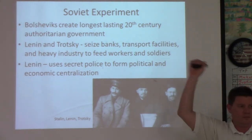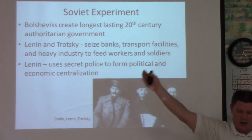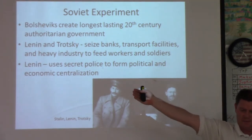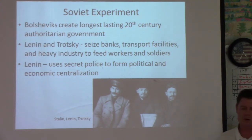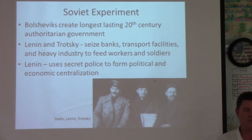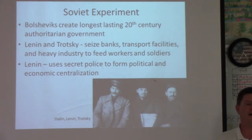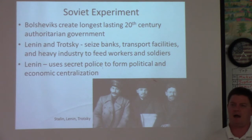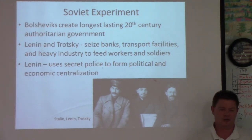Lenin gets off the train in St. Petersburg and meets his supporters. He holds the 1917 version of a press conference and says all governmental power should go to the Soviets — in other words, the common workers should be in charge. Lenin then launches a failed coup. Very similar to Simon Bolivar, who gets exiled, and even Hitler in Germany. Lenin and his right-hand man Leon Trotsky are exiled and thrown into jail.